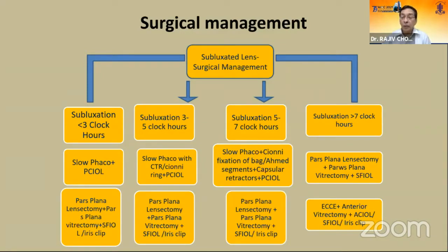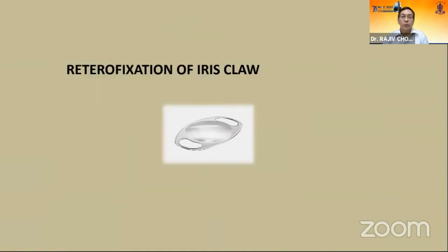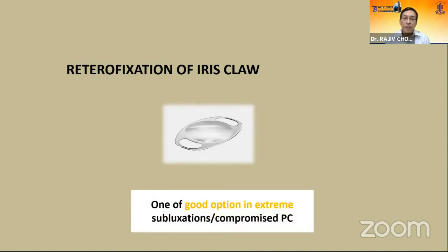My topic is only the iris claw. I am going to cover only the retrofixation of iris claw. It is one of the good lenses designed by John Worst and then modified by Dr. Daljit Singh, which I have been using for the last 30 years. It is a good option in extreme subluxation and compromised posterior capsule.